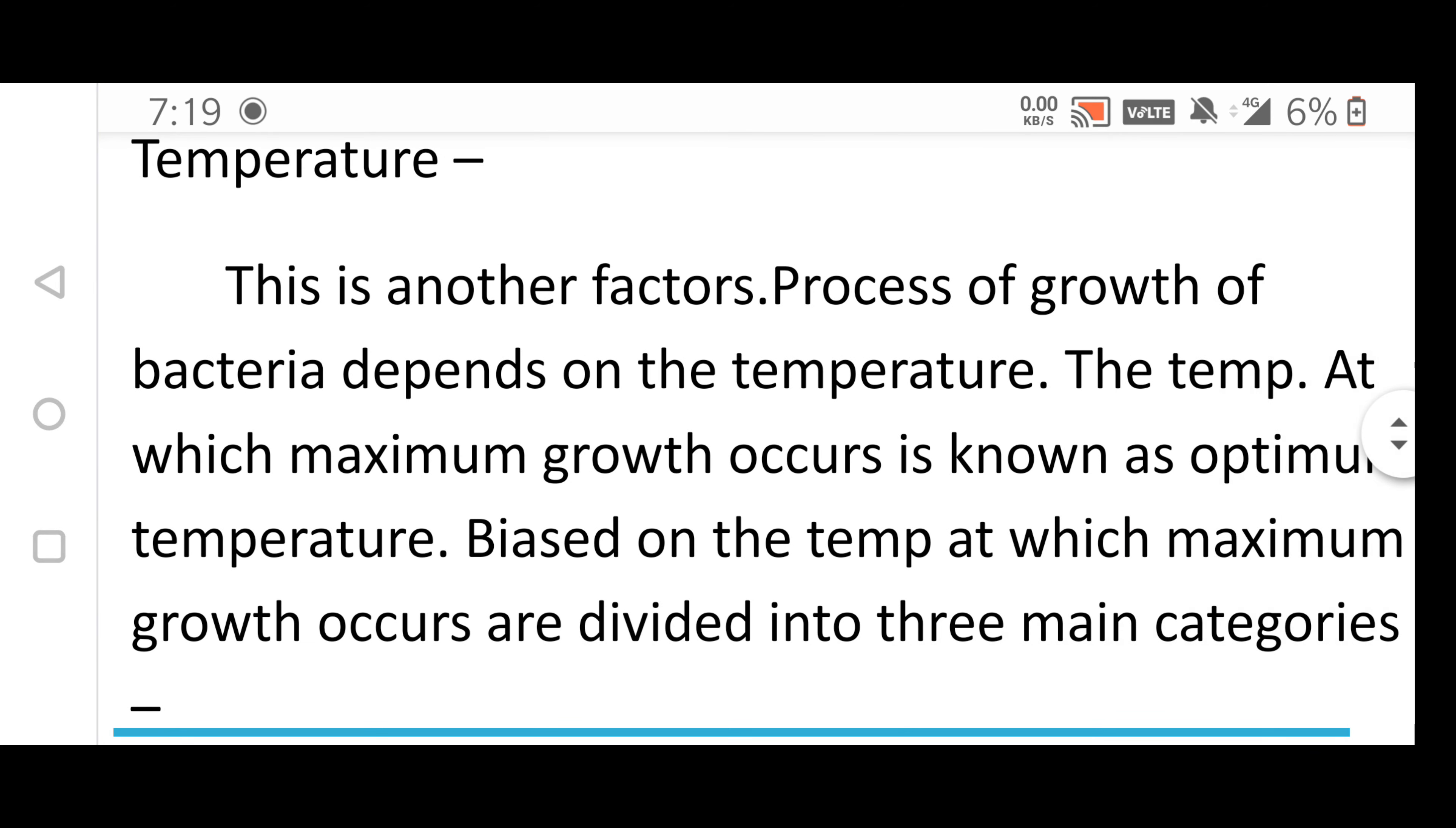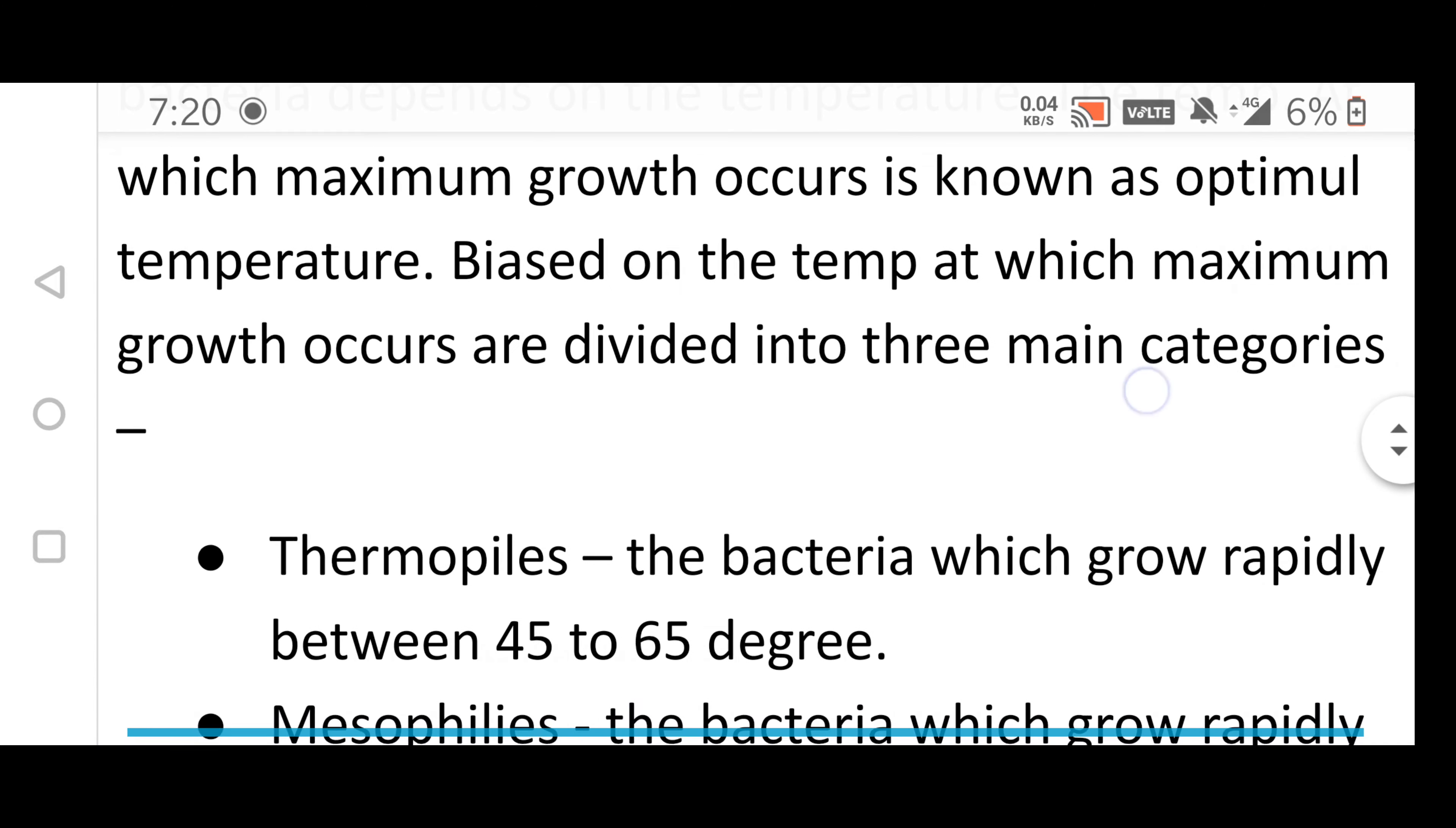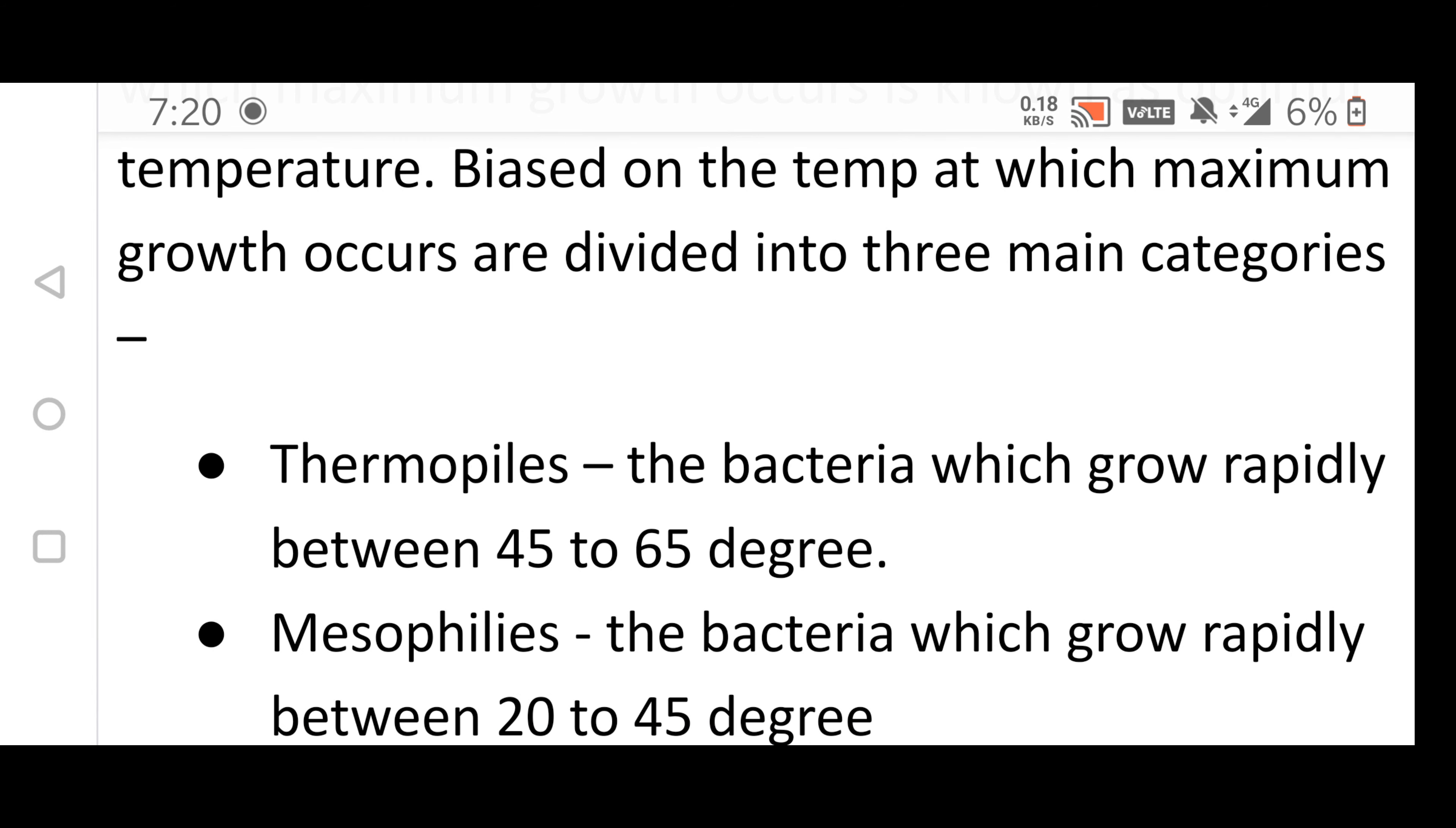Temperature: This is another factor. The process of growth of bacteria depends on temperature. The temperature at which maximum growth occurs is known as optimal temperature. Based on the temperature at which maximum growth occurs, organisms are divided into three main categories.